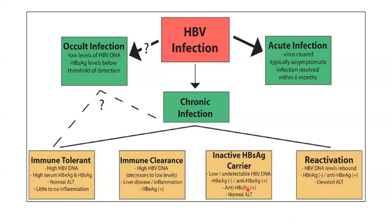Regarding the immune tolerant phase and inactive surface carrier — there are diagnostic dilemmas. If the patient is EAG negative with low DNA and high-trending ALT levels, and other causes have been ruled out, we follow them up. If DNA is high but ALT is not yet high — that is the gray zone. In the gray zone, the diagnosis is resolved by liver biopsy; if there is moderate inflammation, we treat. Otherwise, we don't treat.